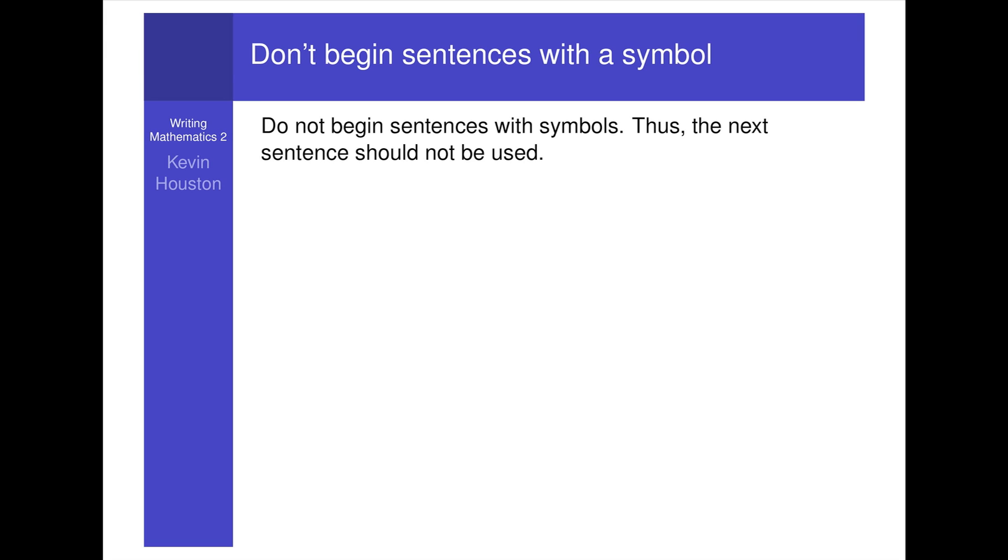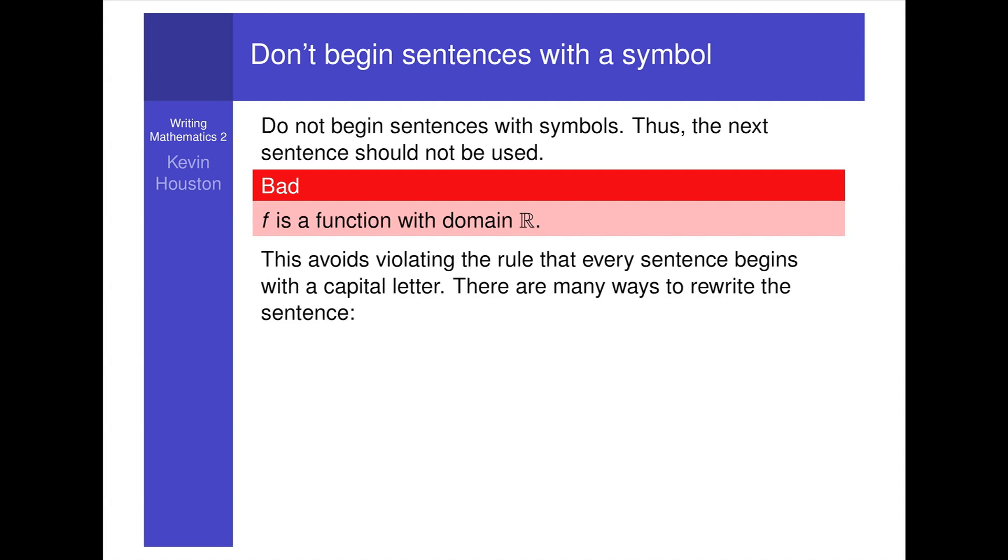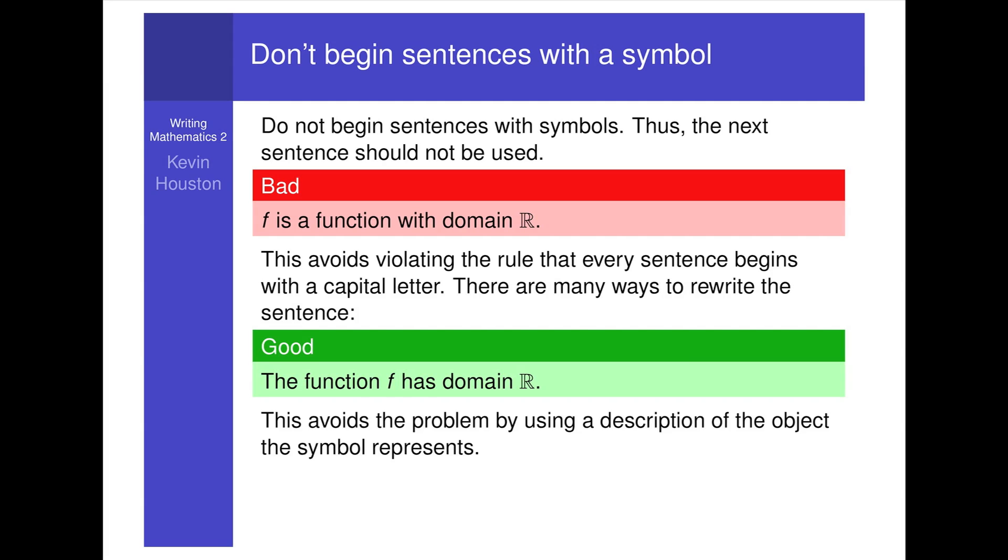Number one. Do not begin sentences with symbols. Thus, the next sentence should not be used: F is a function with domain R. This avoids violating the rule that every sentence begins with a capital letter. There are many ways to rewrite the sentence. A good example is the function F has domain R. This avoids the problem by using a description of the object the symbol represents, i.e. the function F.